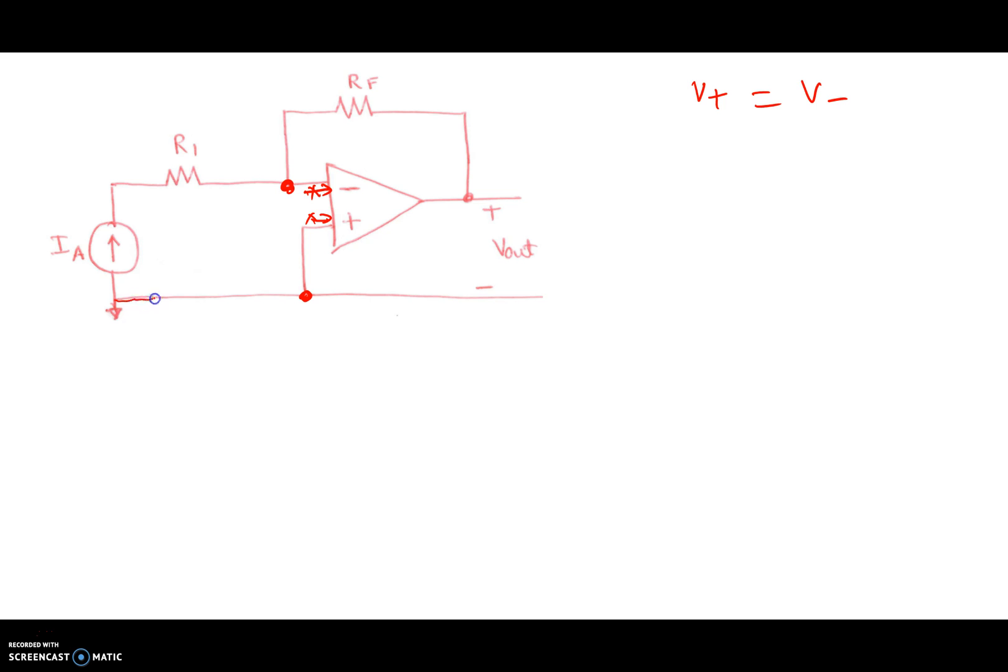Since, in this case, the bottom part is given as ground, this node right there is equal to zero. That means this node right there is also equal to zero. So in other words, V plus and V minus nodes are equal to zero volt or virtual ground.